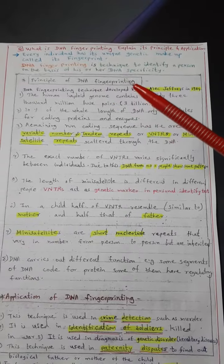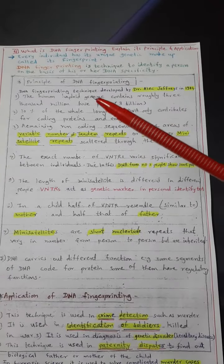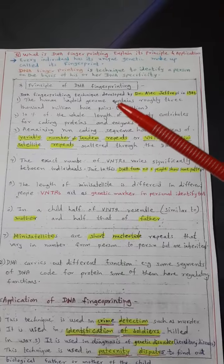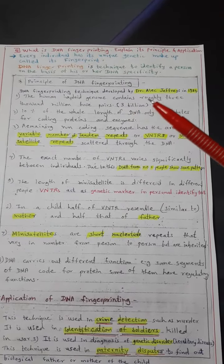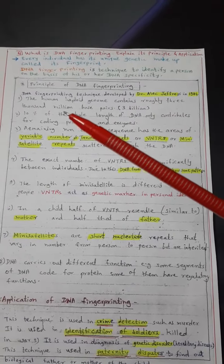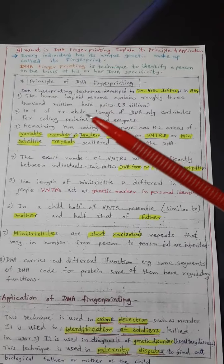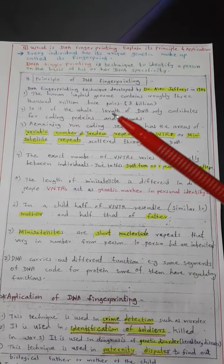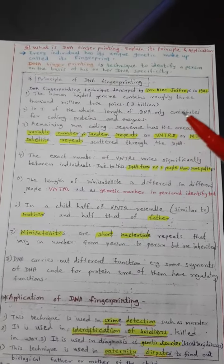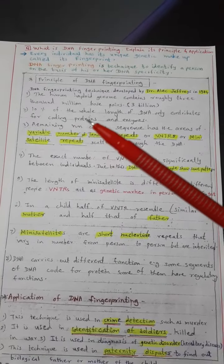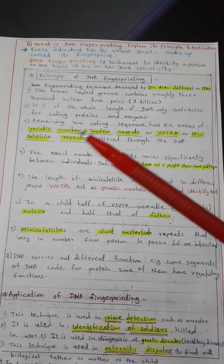The principle for DNA fingerprinting: the human individual has a haploid genome containing about 3000 million base pairs. Here, 10% of the whole length of DNA only contributes to coding proteins and enzymes.